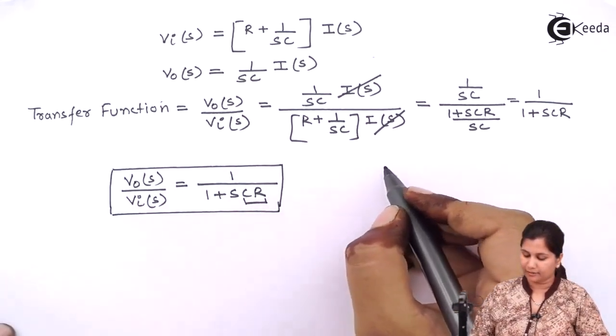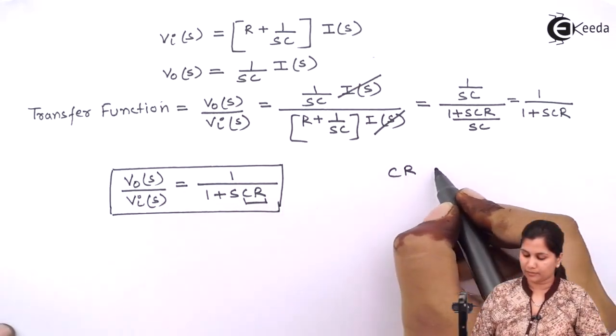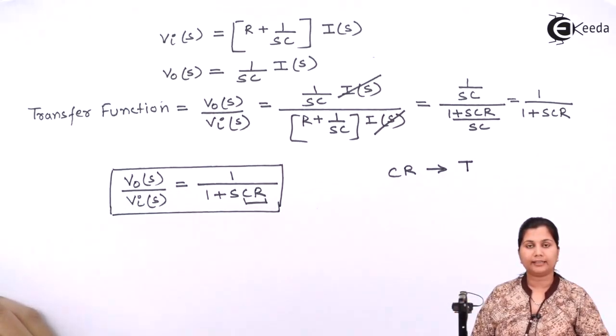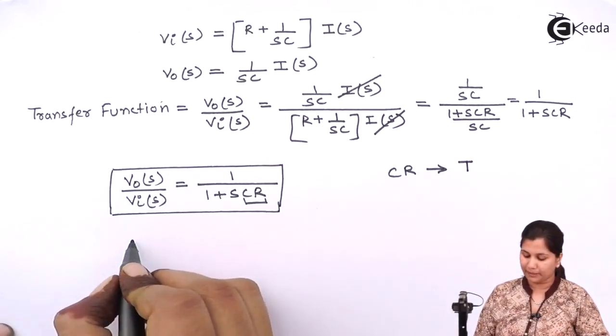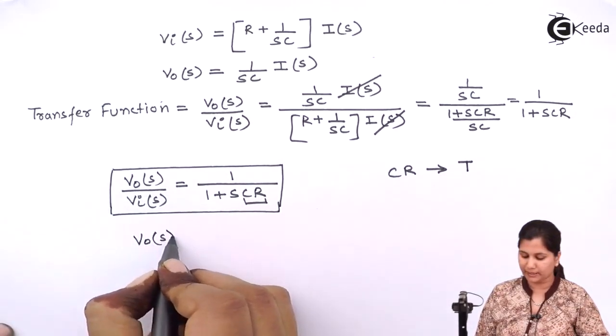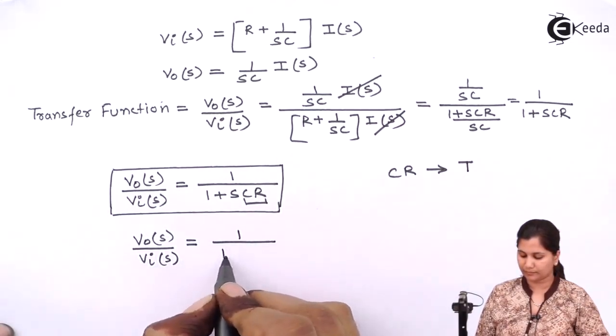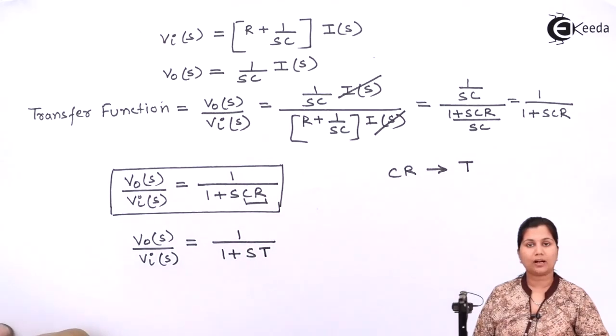This CR is also known as T, that is the time constant of the system. So in some cases, you can also represent this transfer function as 1 upon 1 plus ST.